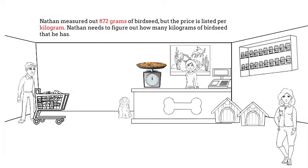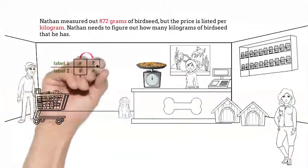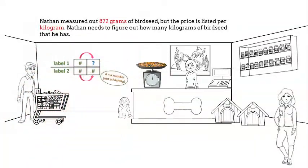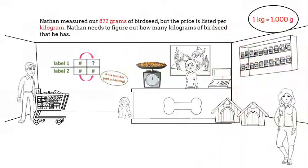Here's our first measurement problem to convert. Nathan measured out 872 grams of birdseed but the price is listed per kilogram. Nathan needs to figure out how many kilograms of birdseed he has. Remember our graphic organizer and remember that one kilogram equals 1,000 grams.